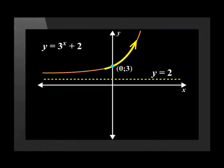That wasn't so difficult, was it? Now we can sketch the graph. It has an asymptote of y is equal to 2, a y-intercept of (0, 3), and the graph is placed above the asymptote. The graph is drawn from left to right, which means it moves away from the asymptote.